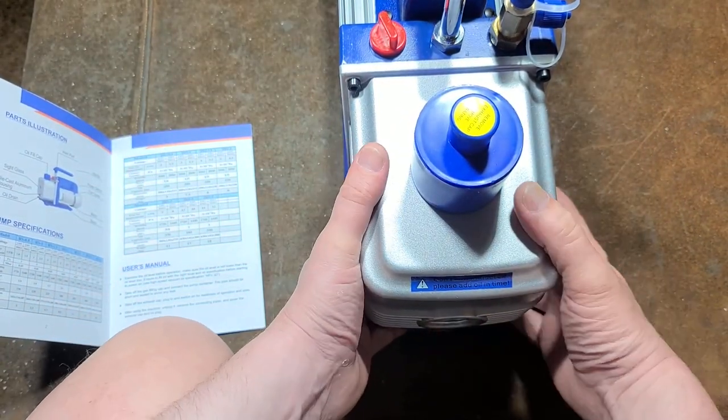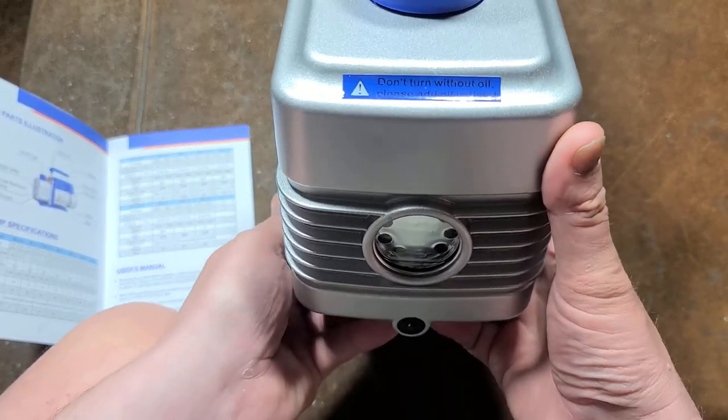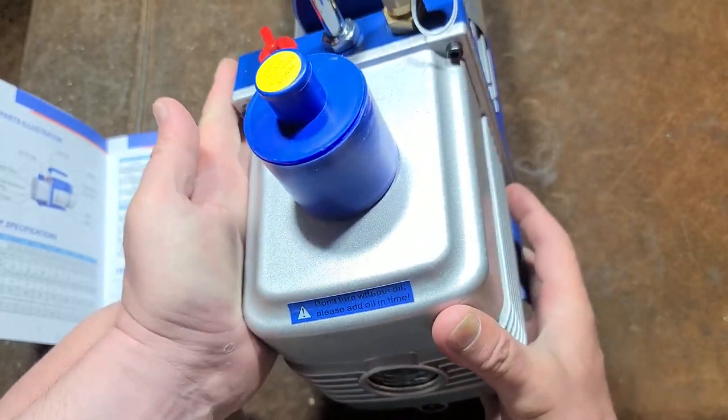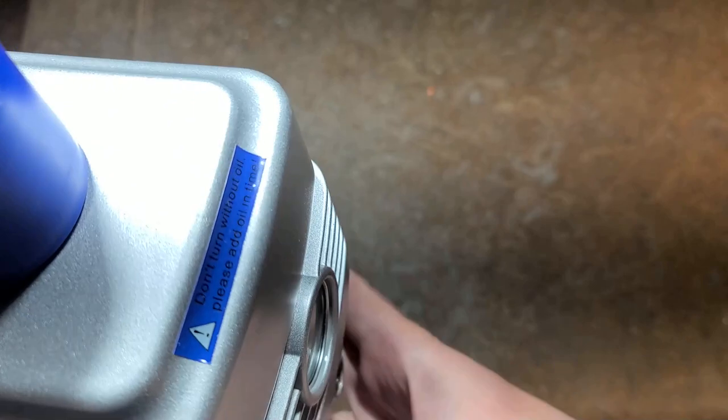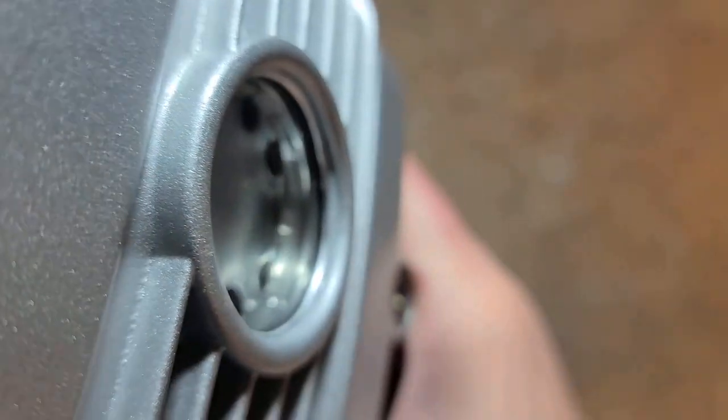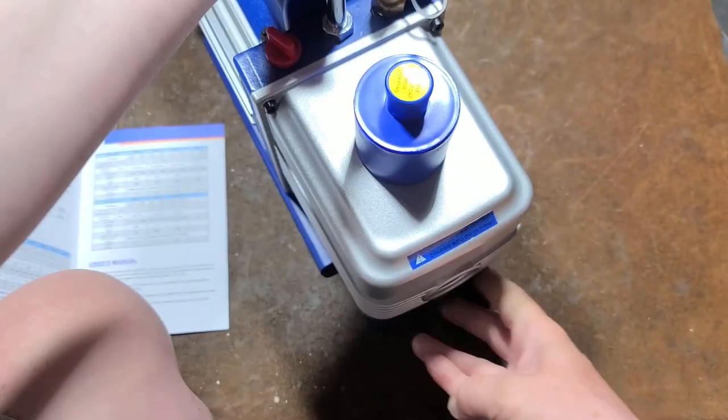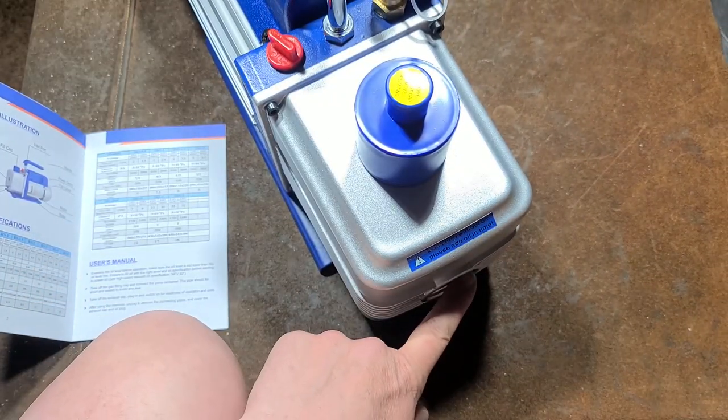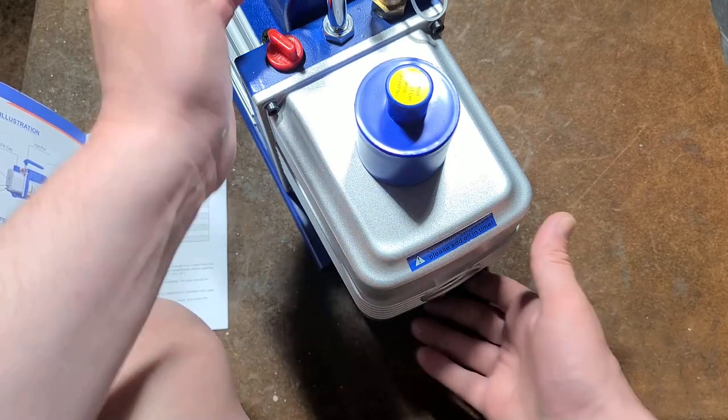Overall, it's a decent value for what the pump is. I'll once again compare to the Robin Air. When the pump's level, you fill it with about half a quart of oil until it's in the middle of the sight glass.